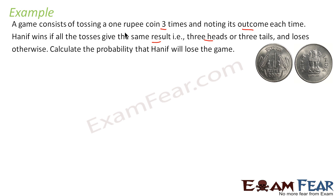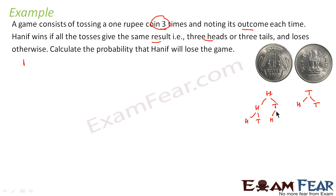We have head and tail of the coin, and it is tossed three times. Let me draw the tree structure here. The first toss gives head or tail. The second toss again gives head or tail for each branch. The third toss also gives head or tail for each branch. This is the full tree we have.